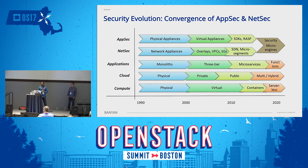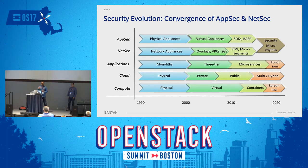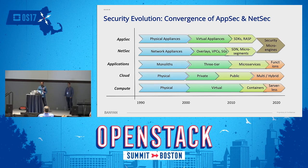We envision security micro engines as converging application and network security into a brand new microservices-layer-level security. A lot of intelligence for security was placed either in SDKs and applications or in underlying network constructs like security groups. Now you can yank out a lot of that complex functionality and set it at the microservices level, so you can talk and reason about security at that level. That's what the world is moving towards, and based on this, we've built out a platform called the Banyan Security Micro Engines Platform.